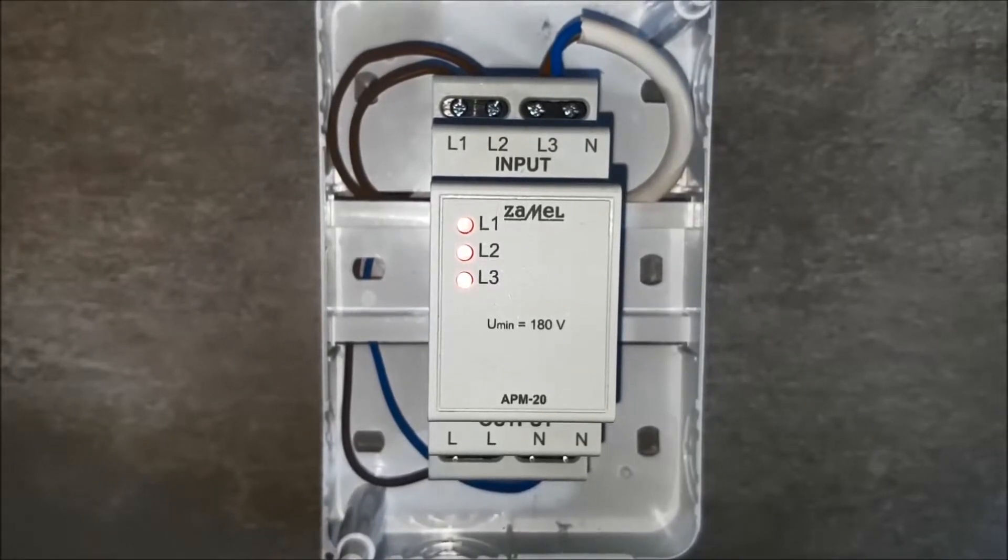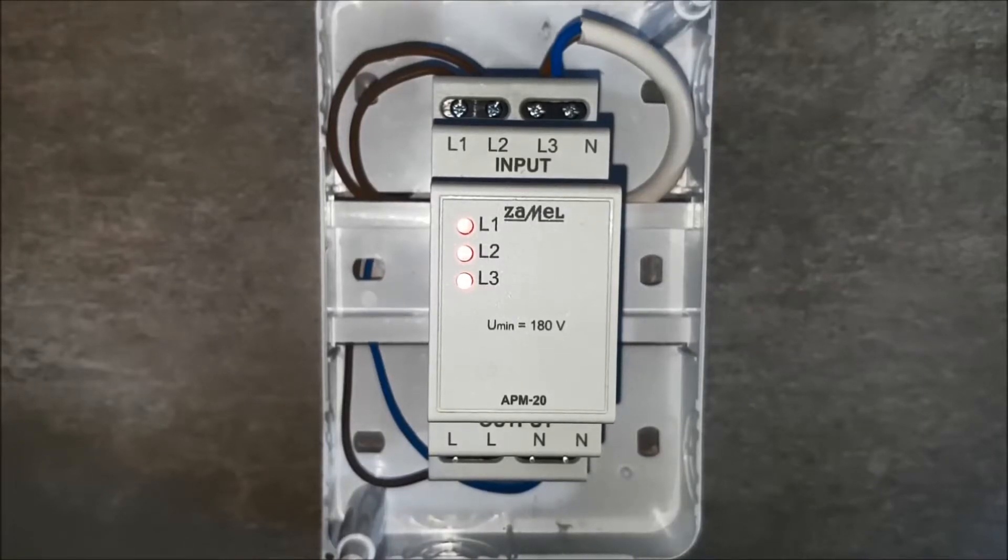After supplying the voltage, the LED indicates the correct mode of the device. Presence of each phase can be seen. At the output of the device, 230 volts is present. Power comes from the first phase.